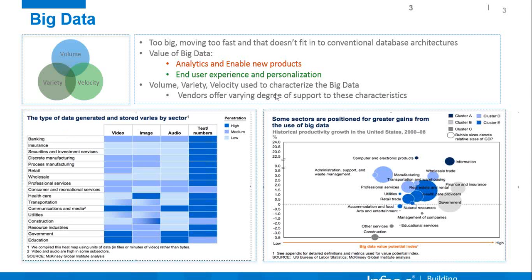On the left-hand side, what constitutes big data from various industries — this is information taken from McKinsey Global Institute. They did a survey of big data and found that many industries like banking and insurance have a large penetration of unstructured data, which is what this heat map is showing. Most of this unstructured data is not mined today to serve their customers — that is their finding, from around the 2011–2012 timeframe.